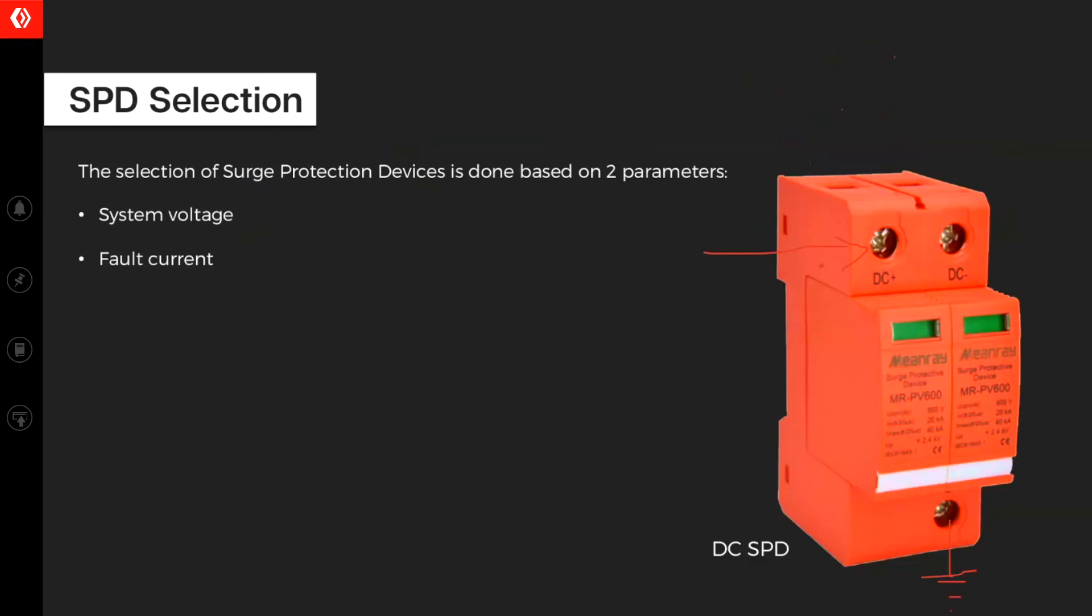Selection of SPD is based on two factors. One is system voltage and the other is fault current. If I'm selecting a SPD for my system, I need to know my system voltage. Can you tell me based on our calculations, what is our system voltage for the DC side till now? It's 1000 volts because we are designing a 1000 volt system, a DC side system. So our SPD would be a 1000 volt DC SPD.